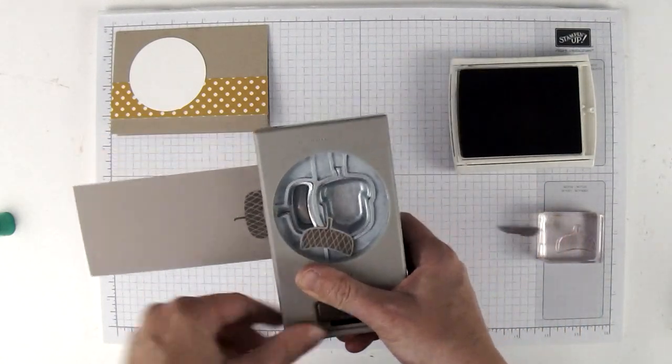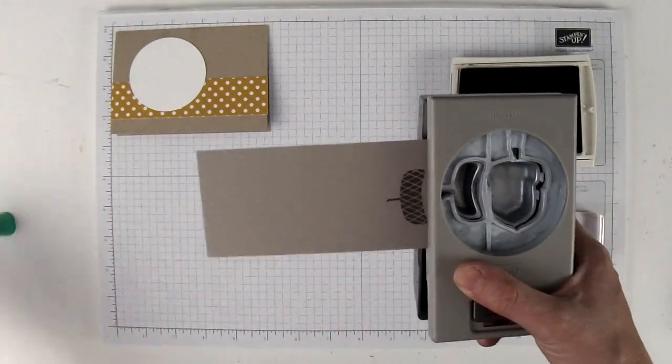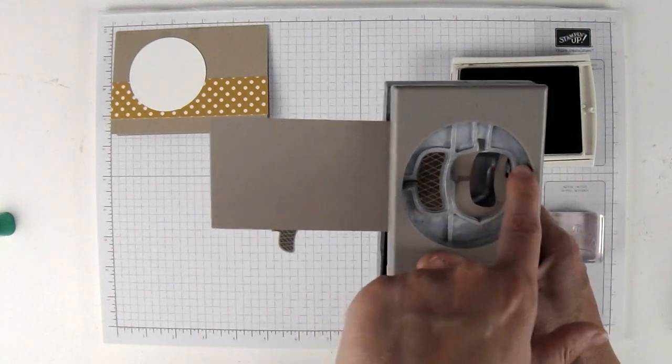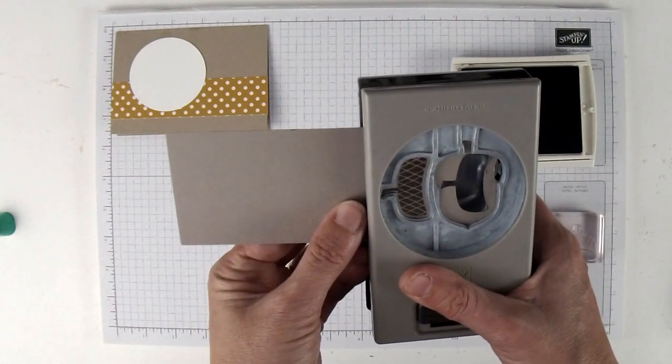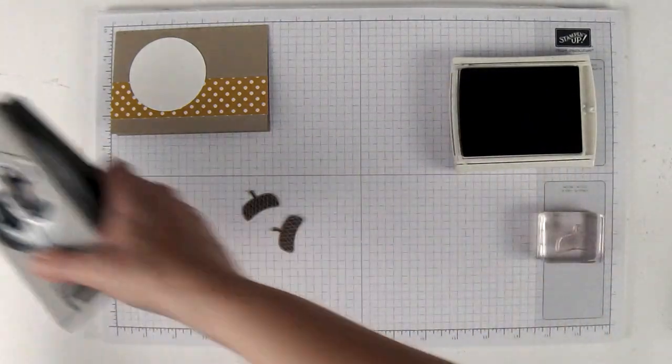I'm going to bring in my acorn builder punch and punch out just the topper part for now. I'm going to put this in on the side like this and punch it once, and then punch it again.